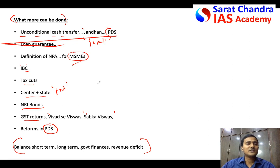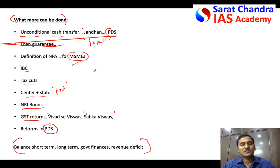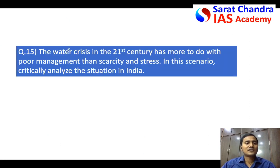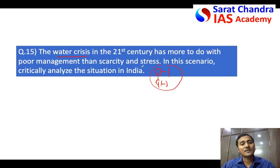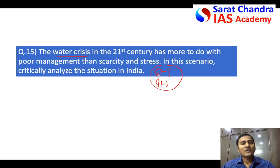In economy answers, you have to write more points and discuss less about each one. Coming to the next question on water crisis: this topic can appear in Geography in GS Paper 1 or in GS Paper 3 Environment. In 2017 mains, the same question was given in both GS1 and GS3. When writing for geography, draw more maps and use more geographical terms; for environment, use more environmental terms and dimensions.